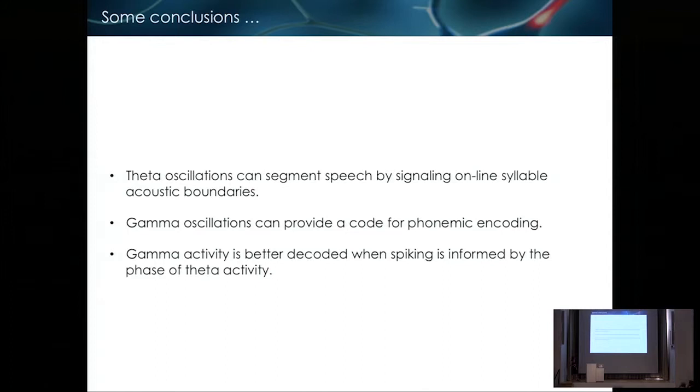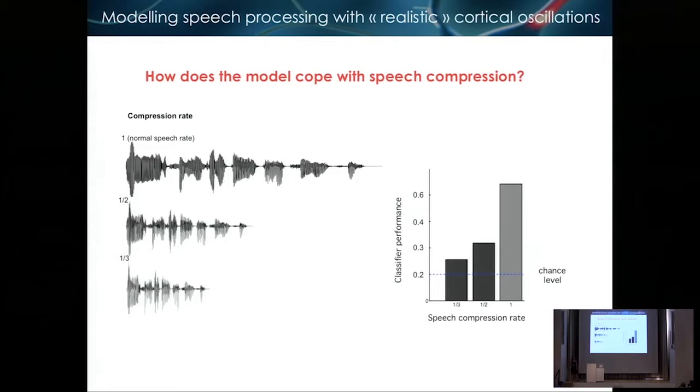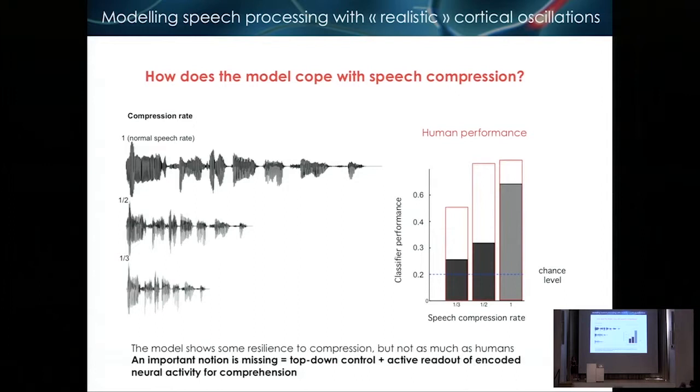So we decoded this activity with a classifier. And we used different codes and different networks to compare. So we used simple code where we take simply the count of the spike within a theta cycle and another more complicated code where we take into account the phase. We label the spikes by the different phases of the theta cycle, which we call the phase partition code. We also compared different variants of our model, the intact version, but also a version where theta and gamma are uncoupled because we want to see whether the coupling is important, and also a version where the theta is not driven by the speech input, meaning that you have an ongoing theta, so it might help, but it's not receptive to the stimulus to the syllable boundaries.